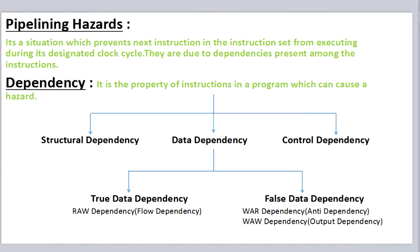There are three kinds of dependency: structural dependency, data dependency, and control dependency. Data dependency is further classified into true data dependency and false data dependency, also known as name data dependency. Read after write dependency, or flow dependency, is an example of true data dependency. Write after read dependency, or anti-dependency, and write after write dependency, or output dependency, are examples of false data dependency.